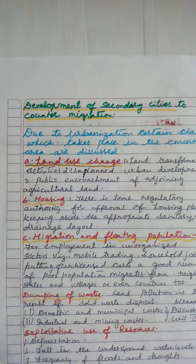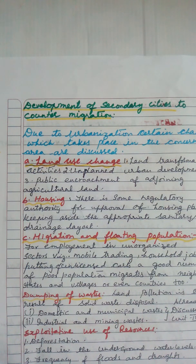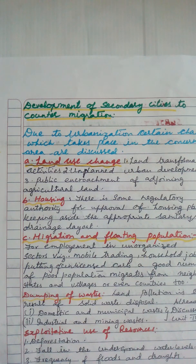Due to urbanization, certain changes take place in the concerned area. Land use changes in towns and cities: land becomes transformed rapidly for a number of activities including housing settlements, road infrastructure build-up, commercial centers, small and medium industrial units, construction and recreation places.